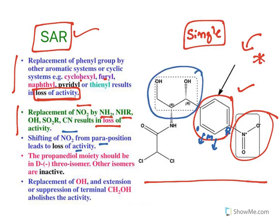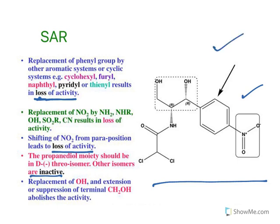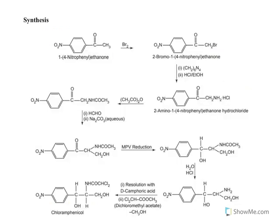The propanediol group must be in the threo isomer — other isomers are inactive. Replacement of the OH group or elaboration with CH2OH also results in loss of activity. So structure-activity relationship indicates every functional group in chloramphenicol is essential for its activity. Changing the structure does not just reduce activity — it causes complete loss of activity, making it inactive.